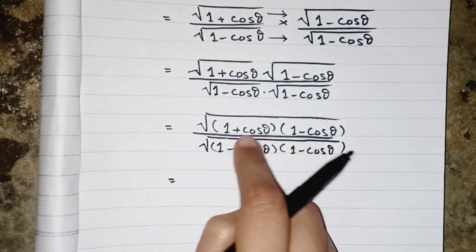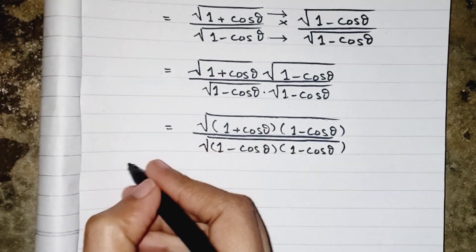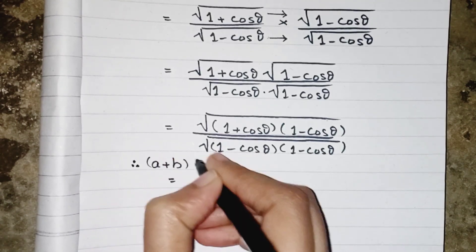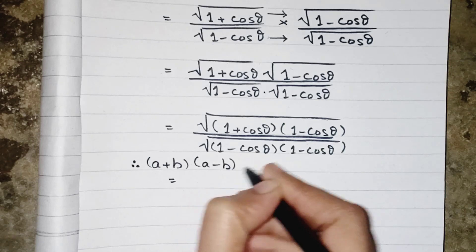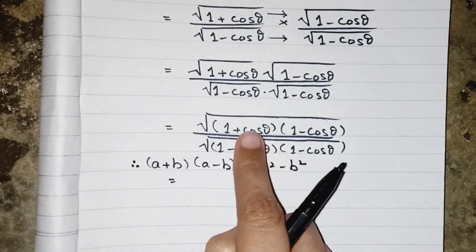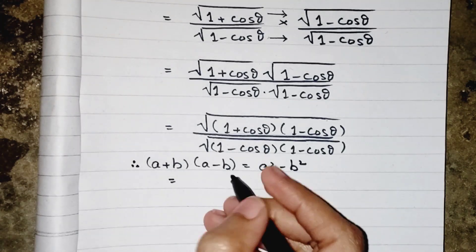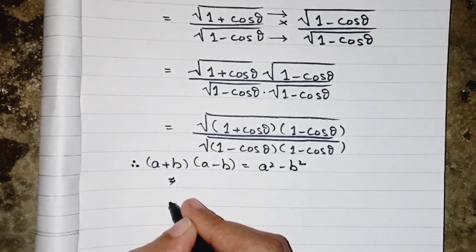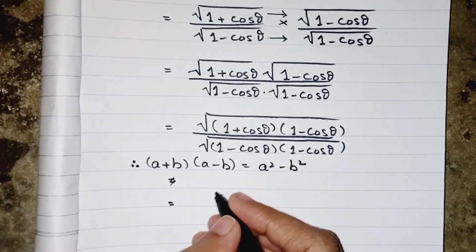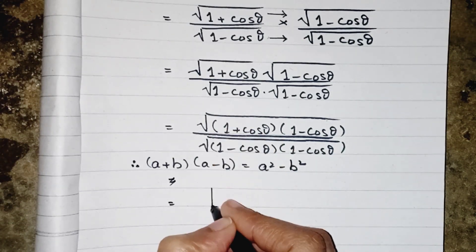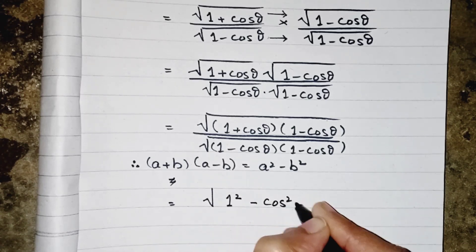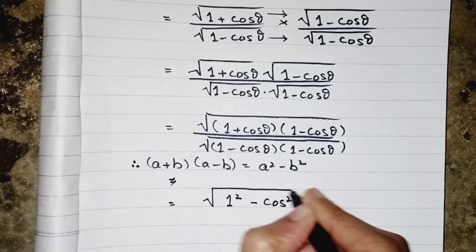In the numerator, we apply the formula (a + b)(a - b) = a² - b². Here a = 1 and b = cosθ, so we get 1² - cos²θ, which is 1 - cos²θ.